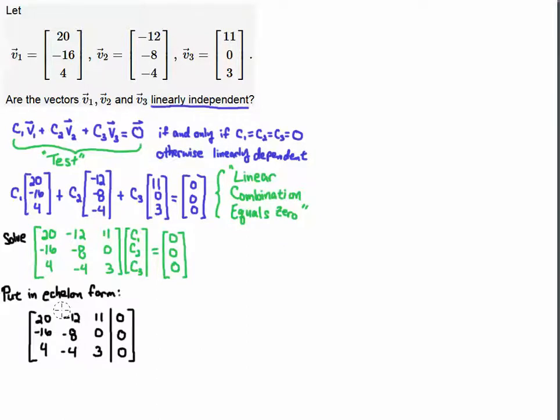I'm going to write this as an augmented system. So I take this linear combination, which is a system of equations—it's the matrix-vector multiply, which is a linear combination of the columns of this matrix. I put it in augmented form, and I'm now going to put this in echelon form because I want to solve the system.